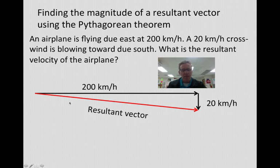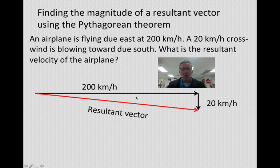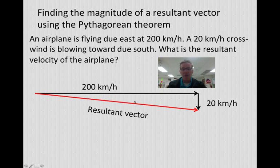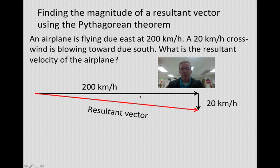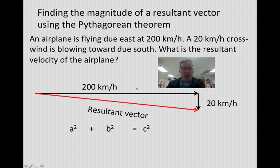The hypotenuse essentially is going to represent what that actual resultant velocity would be. These are velocity vectors, not displacement vectors, but we can still use the length of this side of the triangle to represent that velocity vector. We can simply use the Pythagorean theorem to find that hypotenuse, since we know the sides of what would be side A and side B.